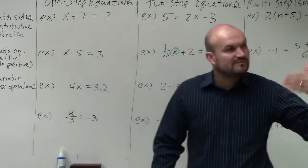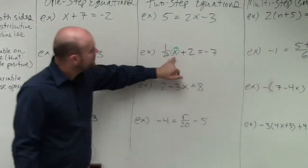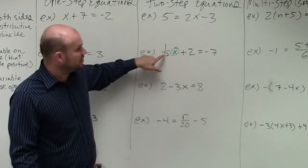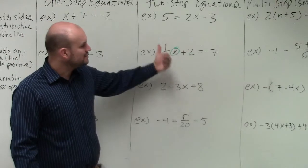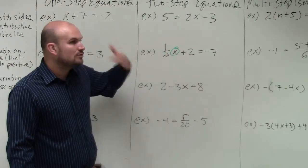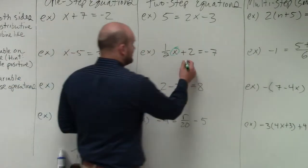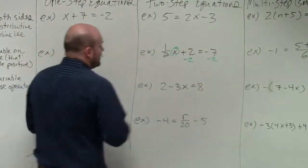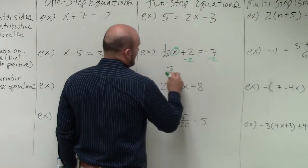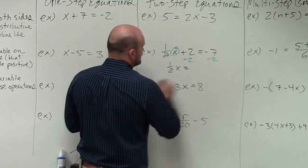And also, we want to use the reverse order of operations. When you look at this variable, you can see the variable is being multiplied by 1/2 and also being added by 2. Whenever you're solving a system equation, you always want to undo addition and subtraction first. So I subtract 2 on both sides, and when doing that, I now obtain 1/2 x equals negative 9.